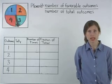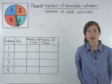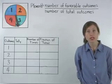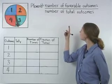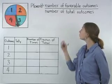Remember from the last section that we can find the probability of a given event using the ratio: probability of an event equals the number of favorable outcomes over the number of total outcomes.